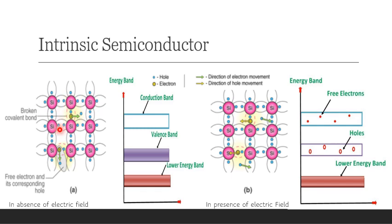At zero degree Kelvin, covalent bonds are very strong and there are no free electrons, so the semiconductor becomes an insulator. Above absolute zero, as the temperature increases, few valence electrons jump into the conduction band and hence the semiconductor behaves like a poor conductor.